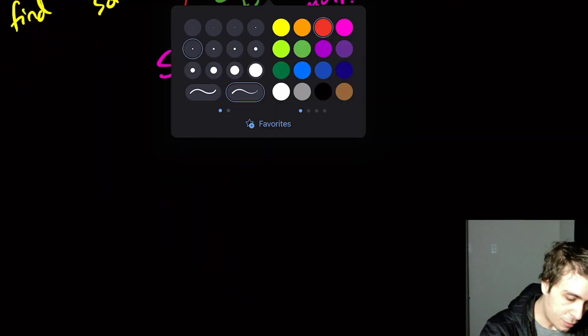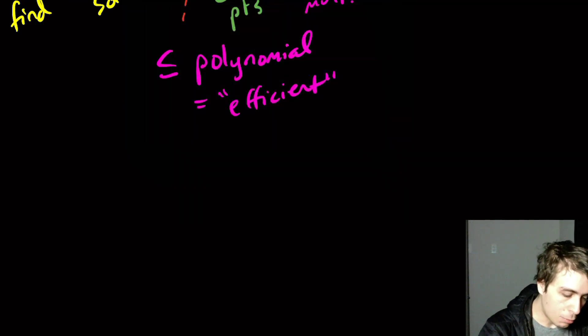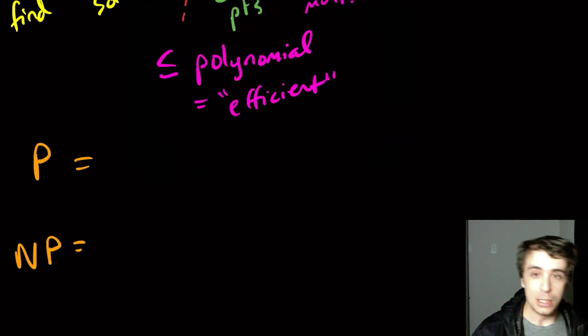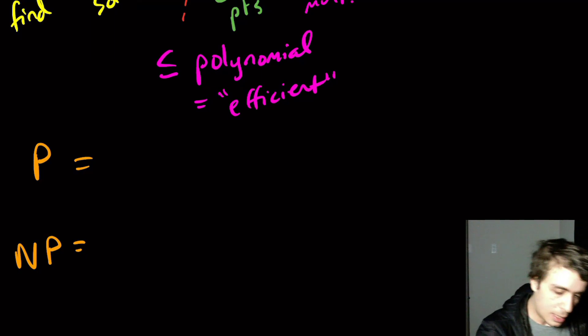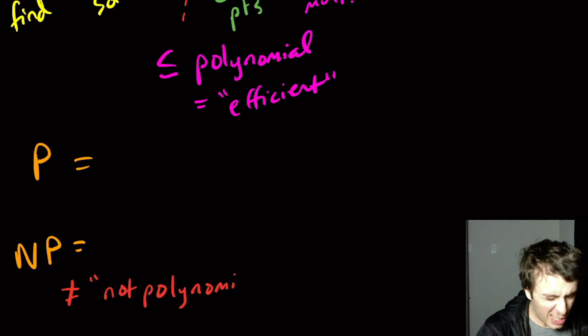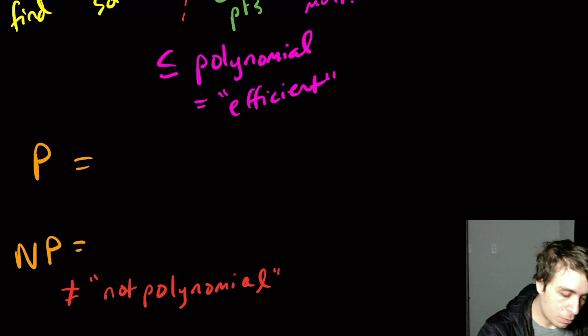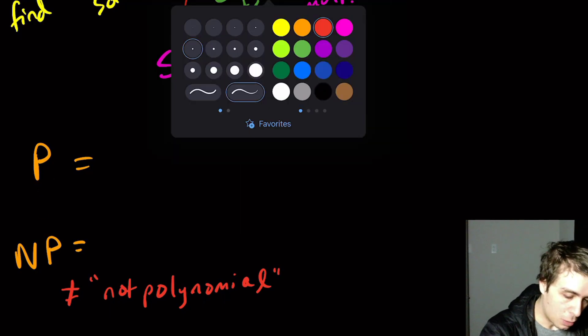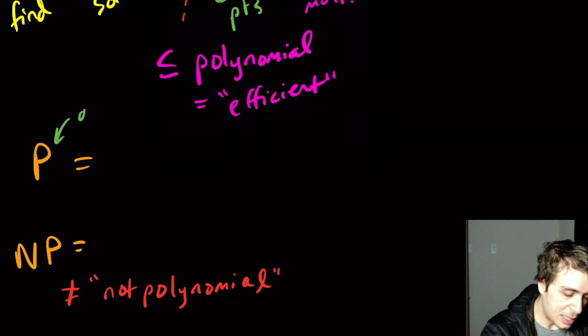We're going to define two things which are P and NP. Before I actually put them here, I should stress that NP does not mean not polynomial. Although it's actually a good idea, it's not actually correct.